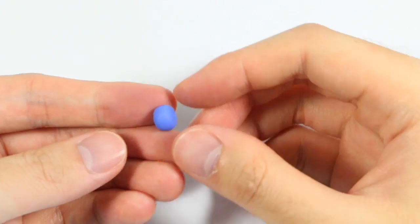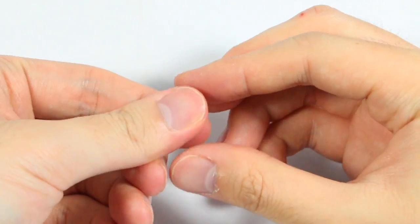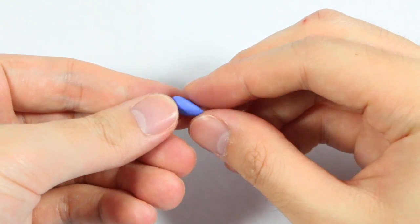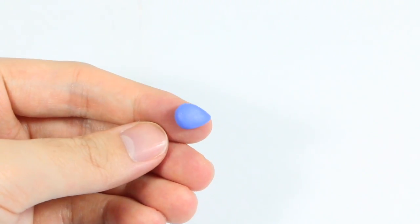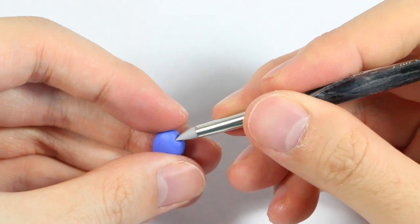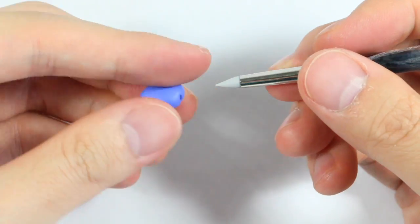Now we're gonna make Dory, so you want to take some blue clay and then you want to pinch it into a teardrop shape and flatten it out. Then for the mouth you want to make an indent and I'm using a chisel tool, but you can use a blade as well.